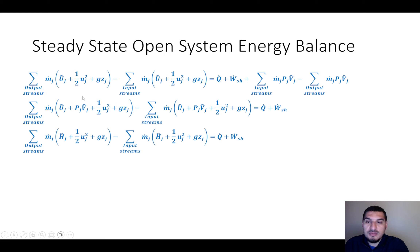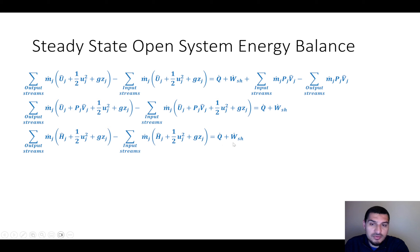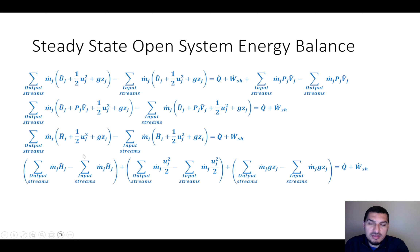By definition, enthalpy H equals internal energy U plus p times V. So the u-hat plus pV-hat terms combine to become the specific enthalpy. The equation becomes: mass flow rate multiplied by (specific enthalpy plus half v-squared plus gz) for output streams, minus the same for input streams, equals Q plus shaft work.